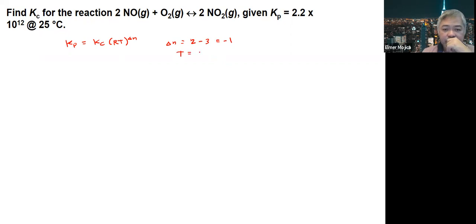Now, temperature here would be 25 + 273, which gives you 298. So rearranging this, you are solving for Kc. You just have to divide both sides by RT^ΔN.